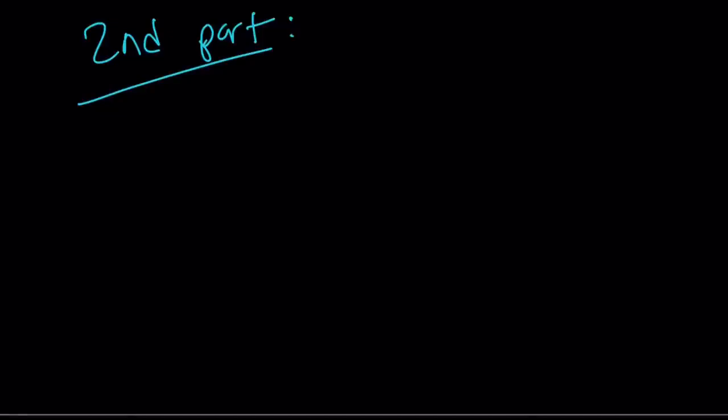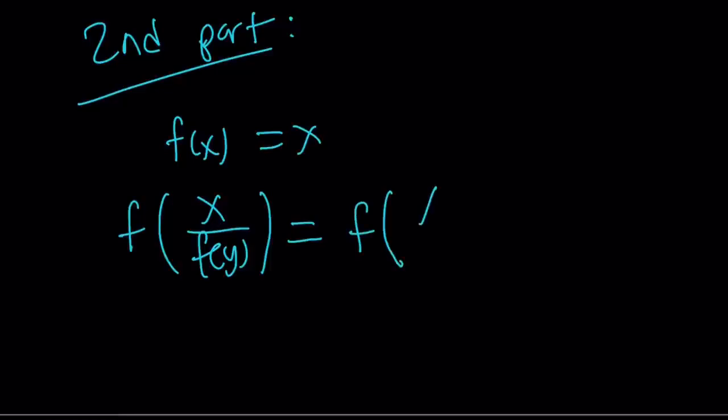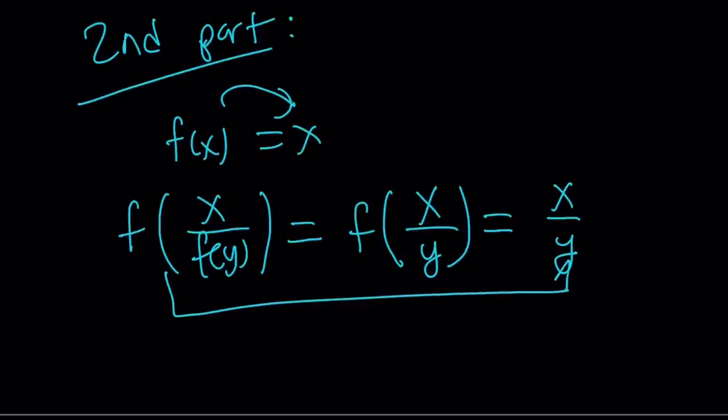So suppose you want the solution to be f of x equals x. You start with the solution, and then you set up the left-hand side of your equation. In a previous video on September 8th, we did f of x over f of y. If I want f of x equals x to be the solution, let's evaluate this. What is f of x over f of y? f of y is y, so f of x over y. What is f of x over y? By this definition, it is x over y. There you go. Here's your problem. That's why I called it homemade.